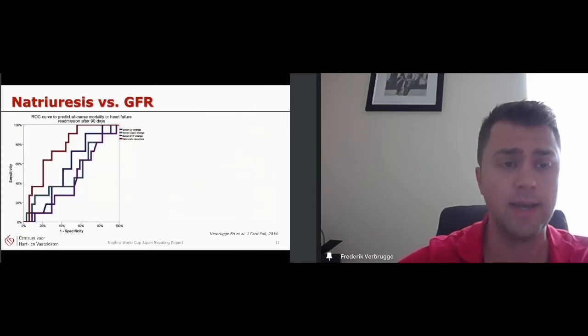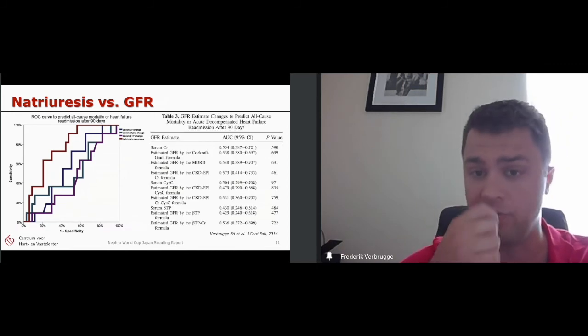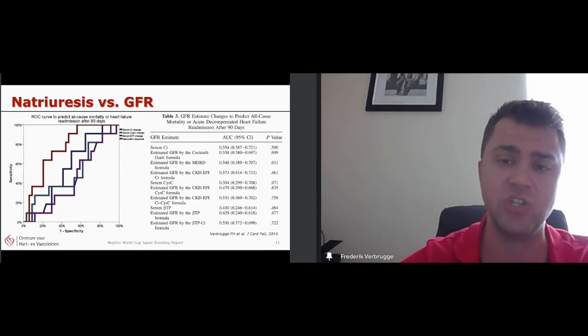We have also shown in heart failure that natriuresis is probably more important than changes in the glomerular filtration rate. So this is change in creatinine, change in cystatin C and beta trace protein, which are all glomerular markers. And as you can see, the red curve, which is natriuresis, is actually the most predictive of heart outcomes, mortality of heart failure, readmissions. And actually none of the changes in GFR were significant. This was also a population with advanced kidney disease. These had an average GFR of 35, so a little bit less advanced than the ones in the study here from the Japanese group.